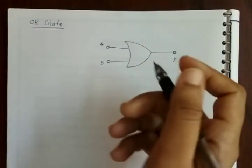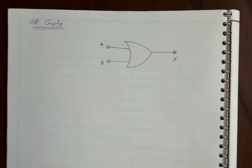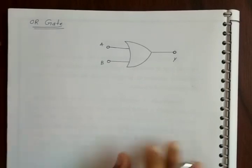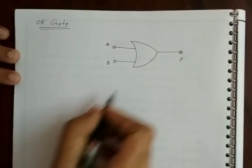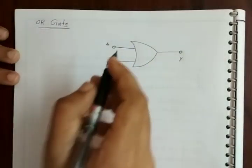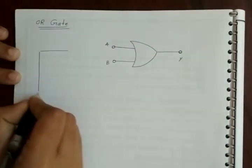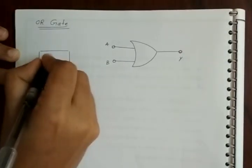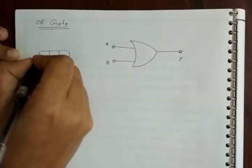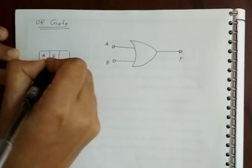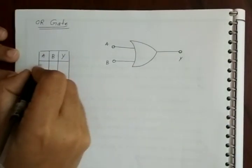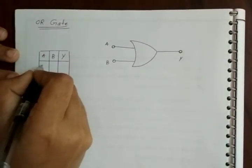We can study the logic expressions with the help of a truth table. If we construct a truth table we can understand what is the variation of output with respect to input. The truth table has two inputs and one output. Input is represented as A and B, and Y is the output.